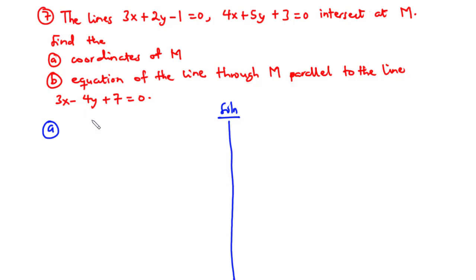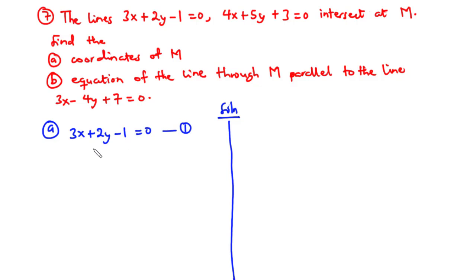To find the point of intersection, we can solve the two equations simultaneously — the x and y values found will be the coordinates of M. We label 3x plus 2y minus 1 equals 0 as equation 1, and 4x plus 5y plus 3 equals 0 as equation 2.